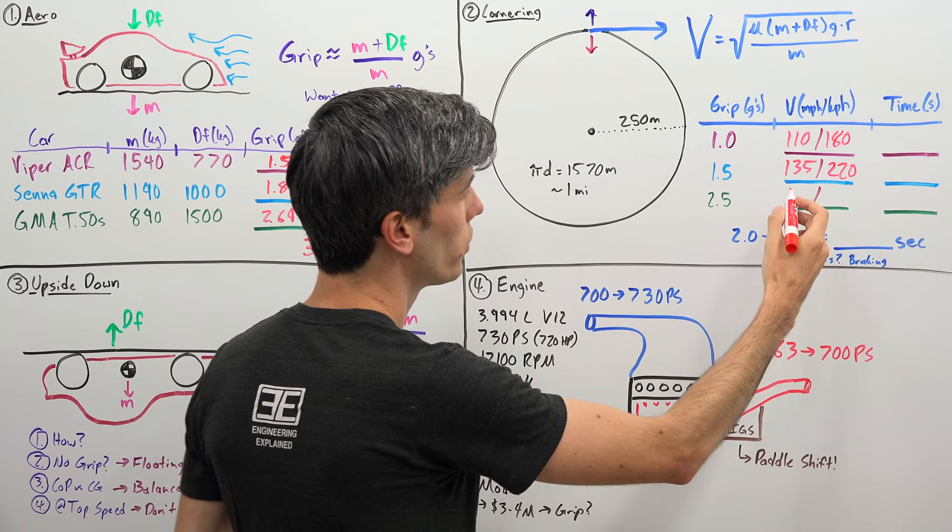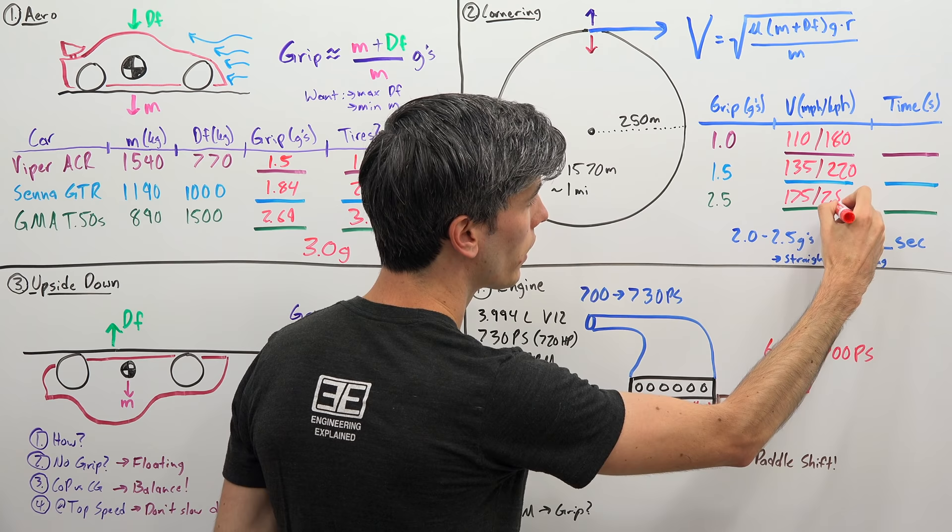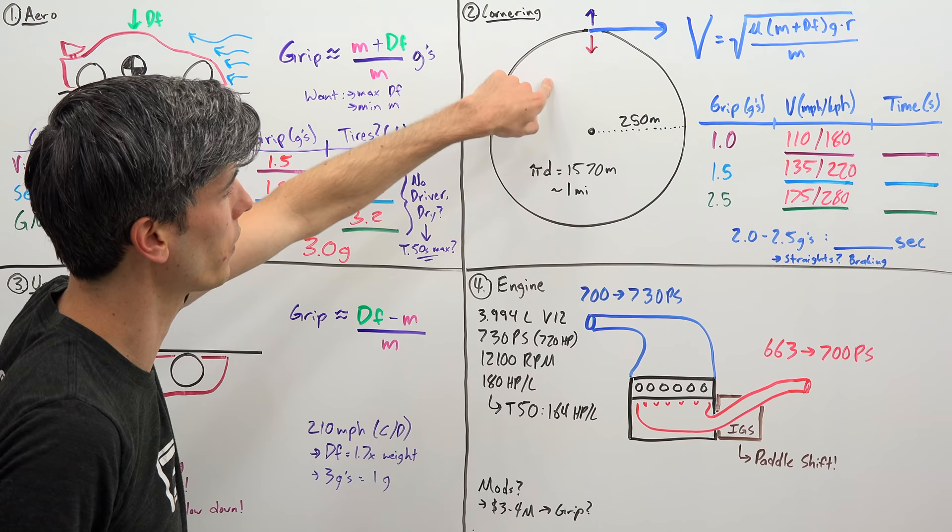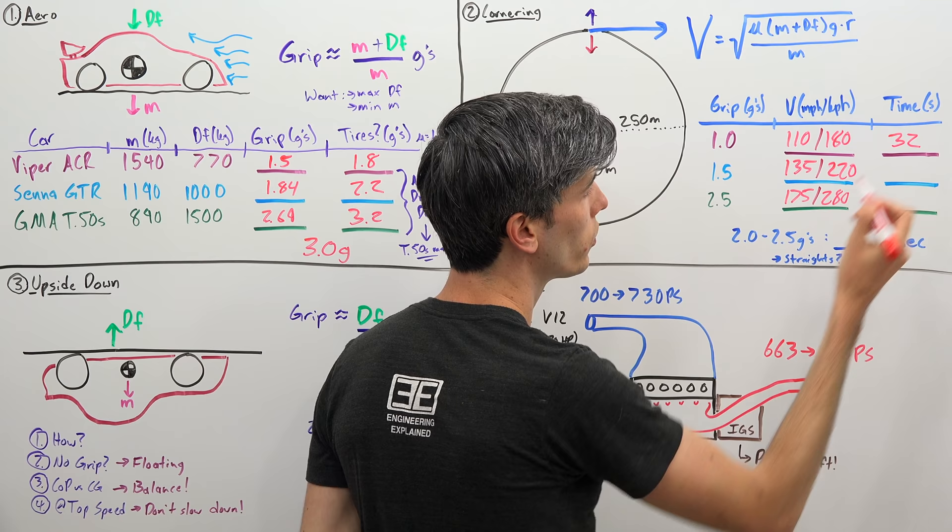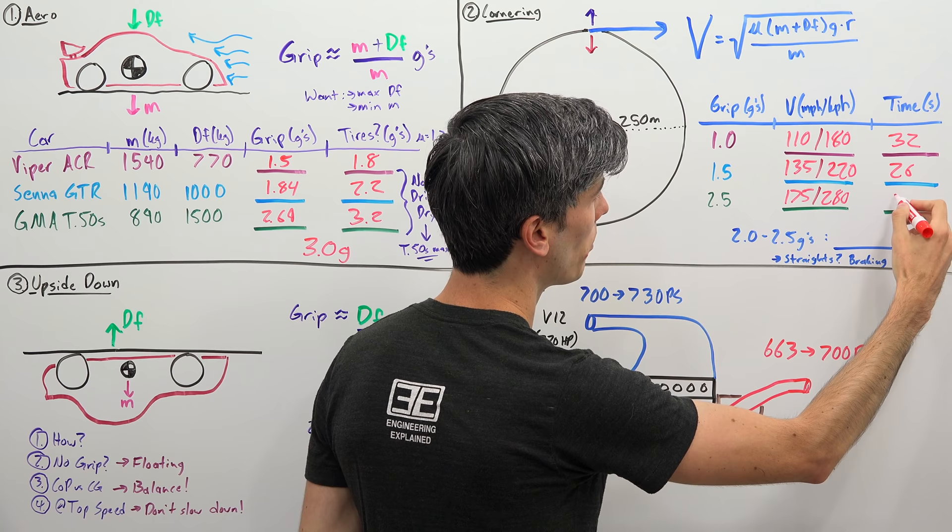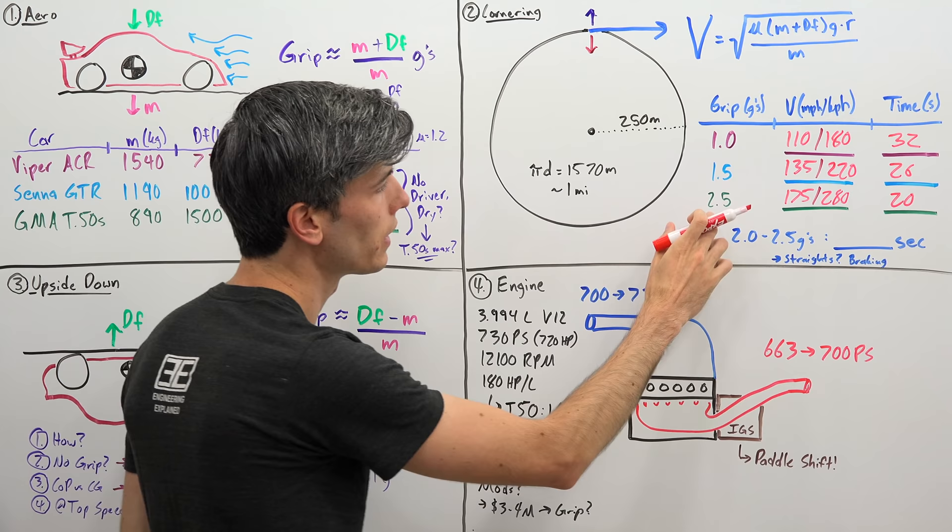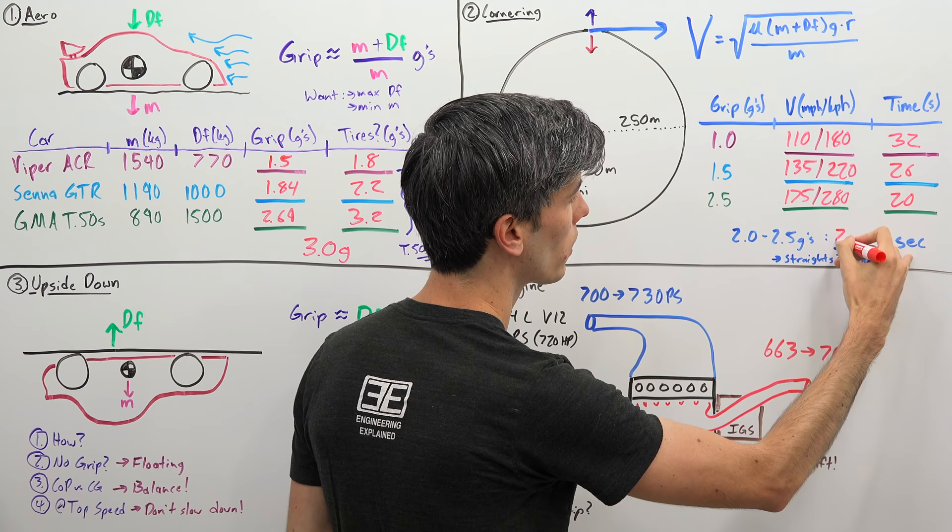What is this in terms of time? We know the circumference, we know how fast we're going, we can see how long it takes to go around that circle: 32 seconds for the average road car, 26 seconds for that Dodge Viper, and about 20 seconds for our T50s. Realistically it'll probably be somewhere in the 2 to 2.5 G's, so we're really looking at about 20 to 22 seconds.